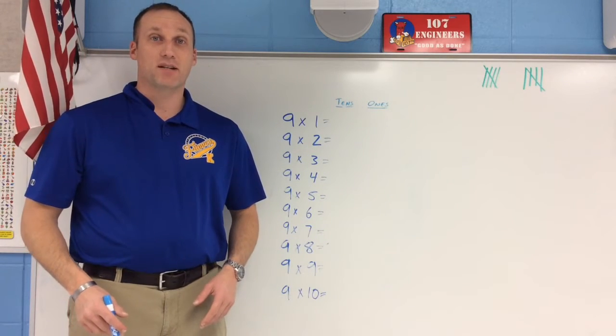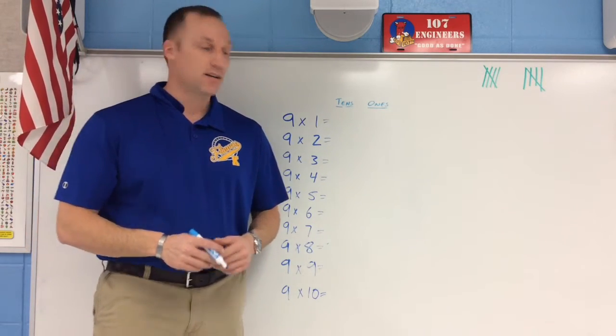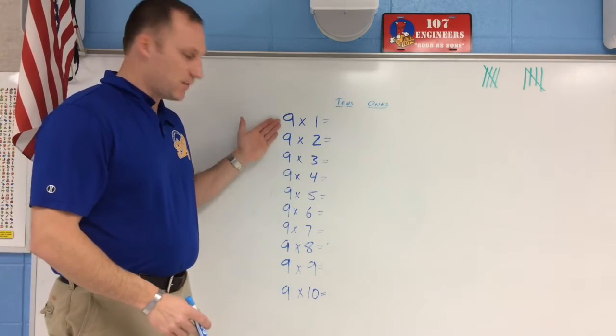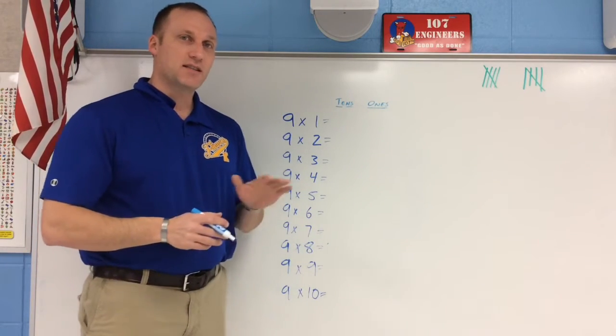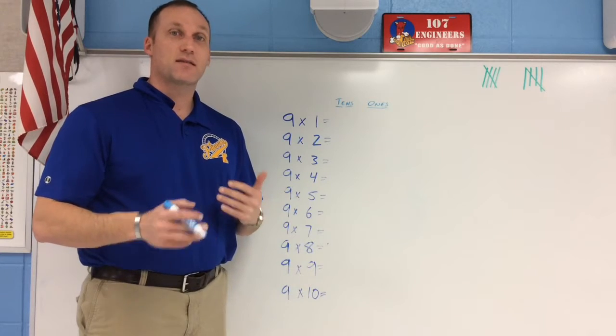The number 9 has some pretty unique properties when you look at multiplying. I want you to see here I have 9 times 1 through 9 times 10. I'm going to deal with the tens place and the ones place separately.